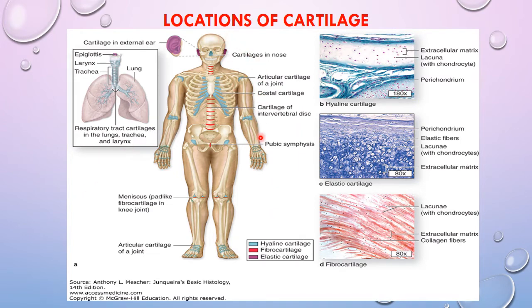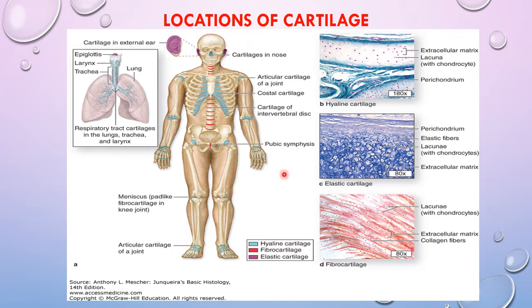Cartilage has a wide distribution in the body. In this color-coded diagram, the turquoise color represents hyaline cartilage, red represents fibrocartilage, and magenta represents elastic cartilage. Hyaline cartilage is the most numerous in the body — it is located at the tip of the nose, the costochondral junctions, all the ribs, articular surfaces of synovial joints, laryngeal cartilages, the trachea, main bronchi, and segmental bronchi.